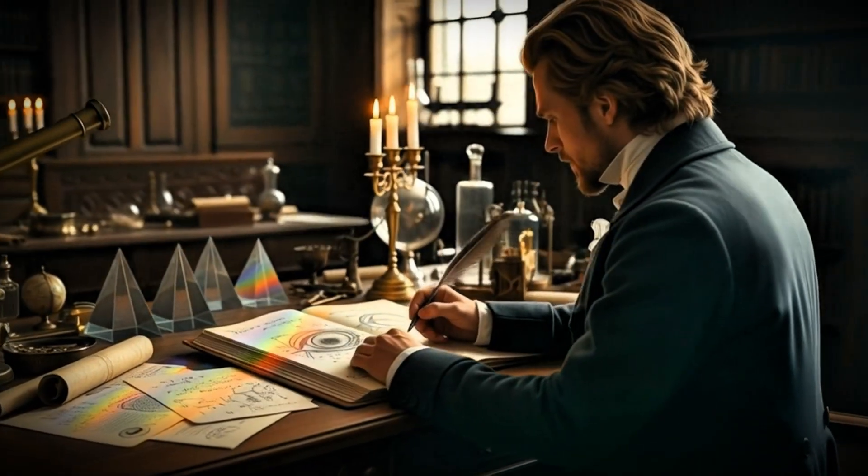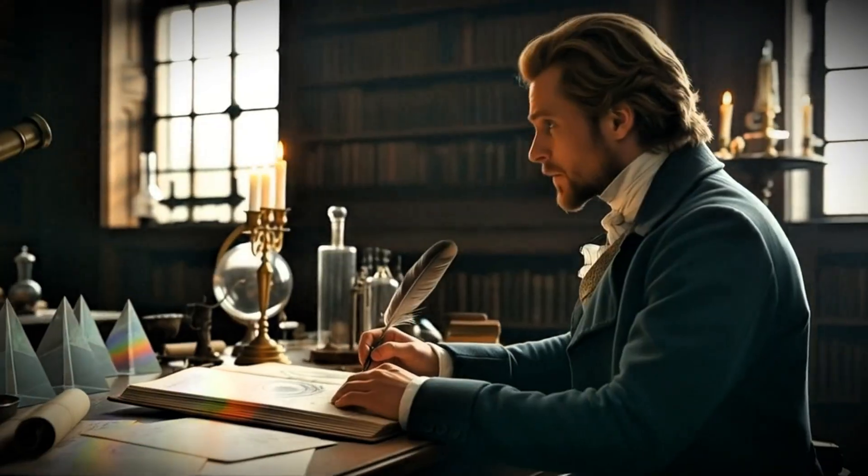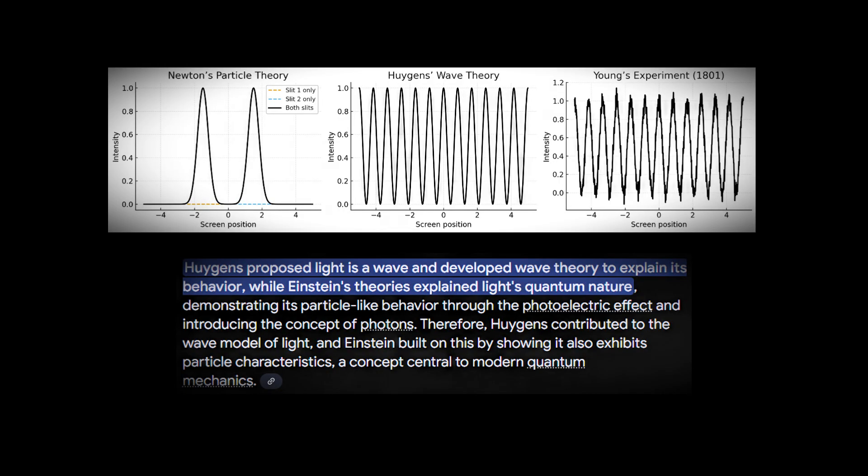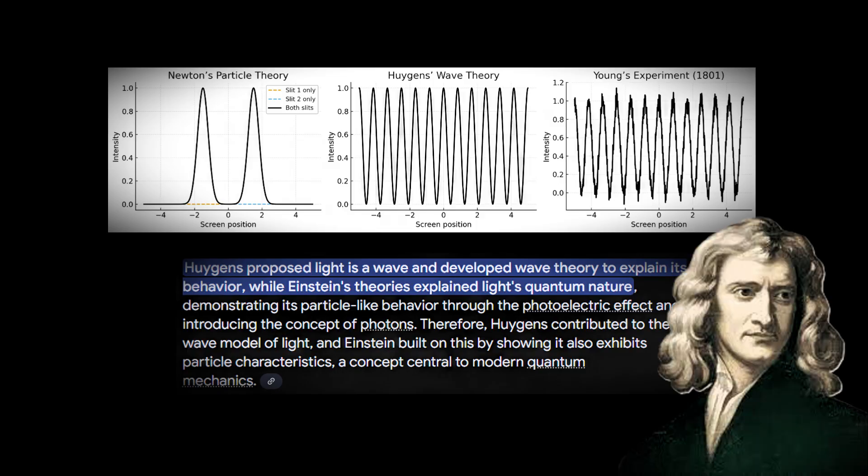At that time, most people believed in Isaac Newton's idea that light was made of tiny particles. A few, like Huygens, had suggested that light might be waves, but Newton's reputation was so strong that the particle theory was more widely accepted.